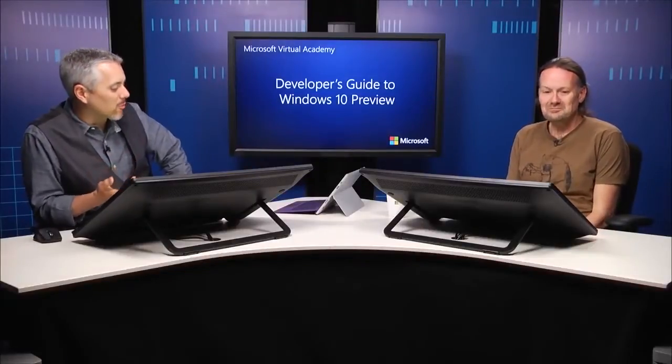A couple of new controls we saw was the relative panel. We also talked about the month calendar and then just in general the navigation framework. But then along comes the split view that helps make navigation even easier and maybe a little more uniform across all of our different pages. Sometimes it's easy to get lost in an application when you drill down and never have a context. Something like this can give you an opportunity to have some sort of UI for that.